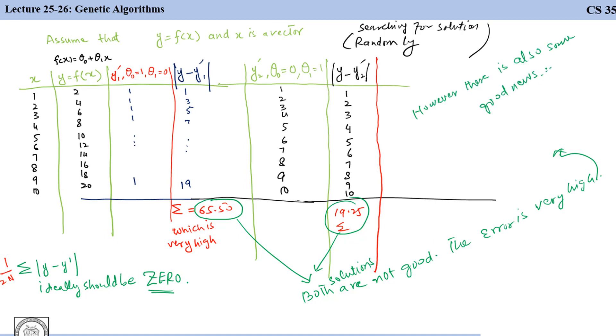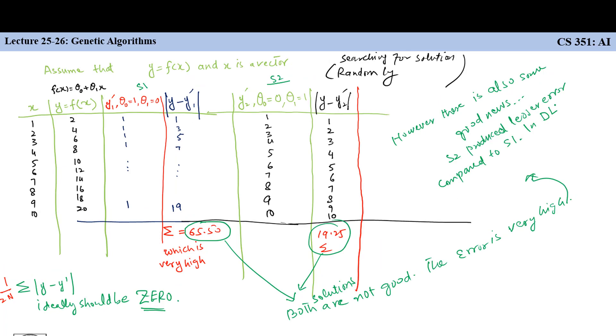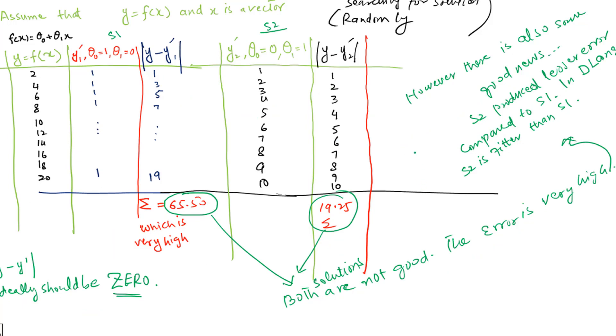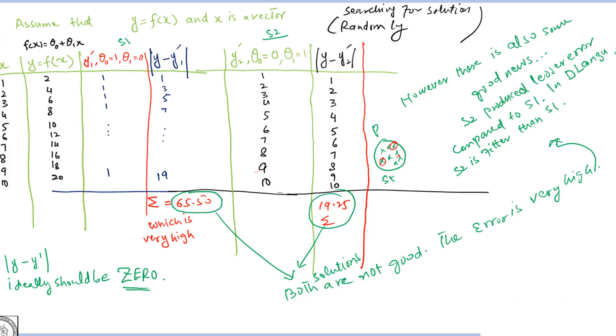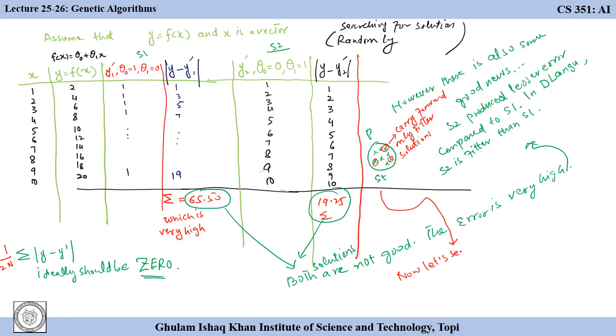However, the good news is that S2 produces lesser error than S1. In Darwin's language S2 is fitter than S1. So for problem P we can start with some randomly generated solutions at time t, select fitter candidates, and carry them forward to produce the next set of solutions.